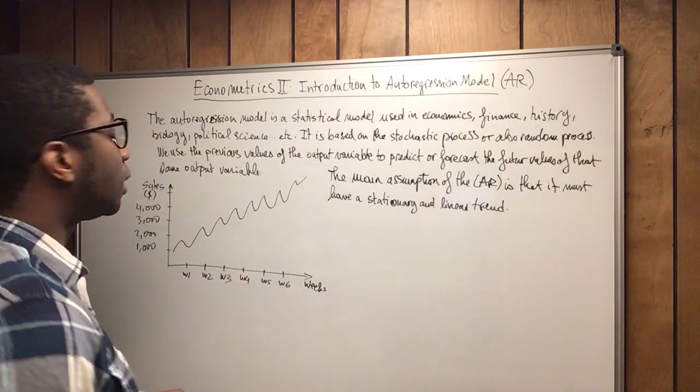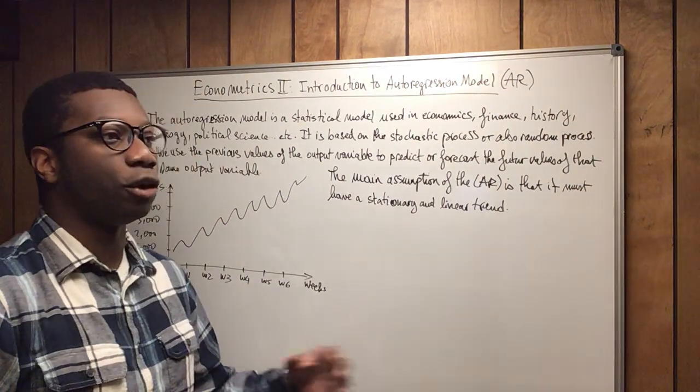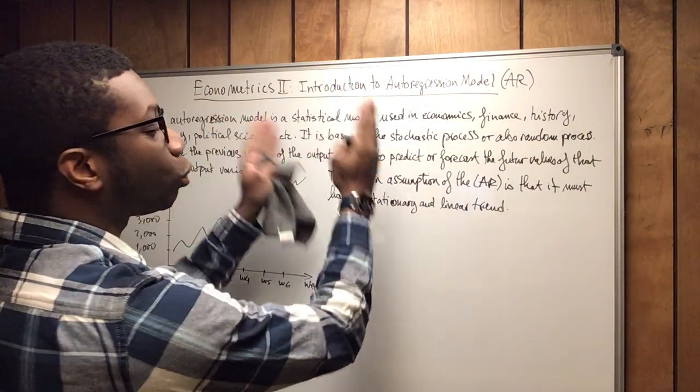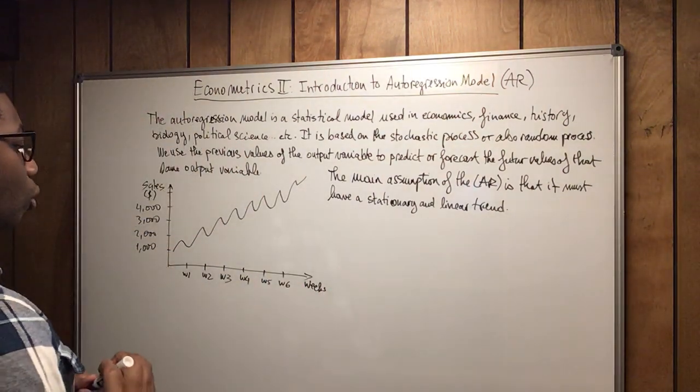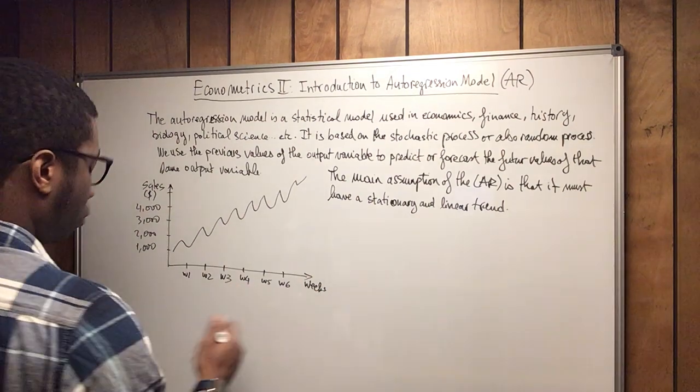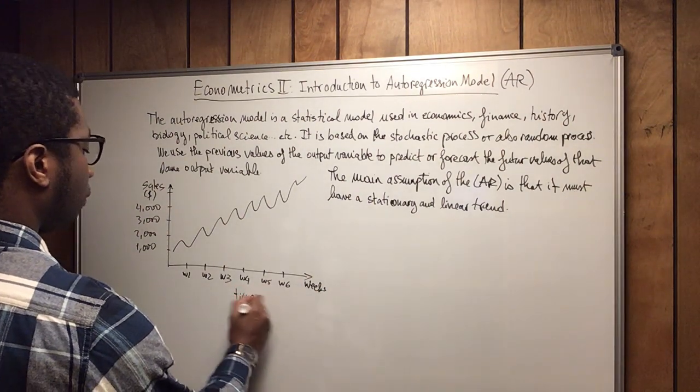So if you think about it, the autoregression model is a little bit like the simple linear regression, but it is strictly applied to time series data. So here, this is basically time, then sales.